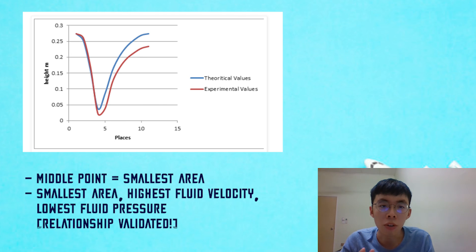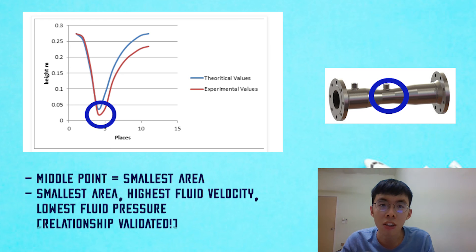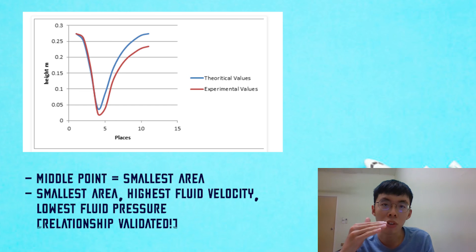And as shown by the graph, points with higher velocities are at lower depth. At the middle point, which is the center of the venturi meter, the area allowing the fluid flow is the smallest, hence the highest fluid velocity, and the lowest depth and fluid pressure.